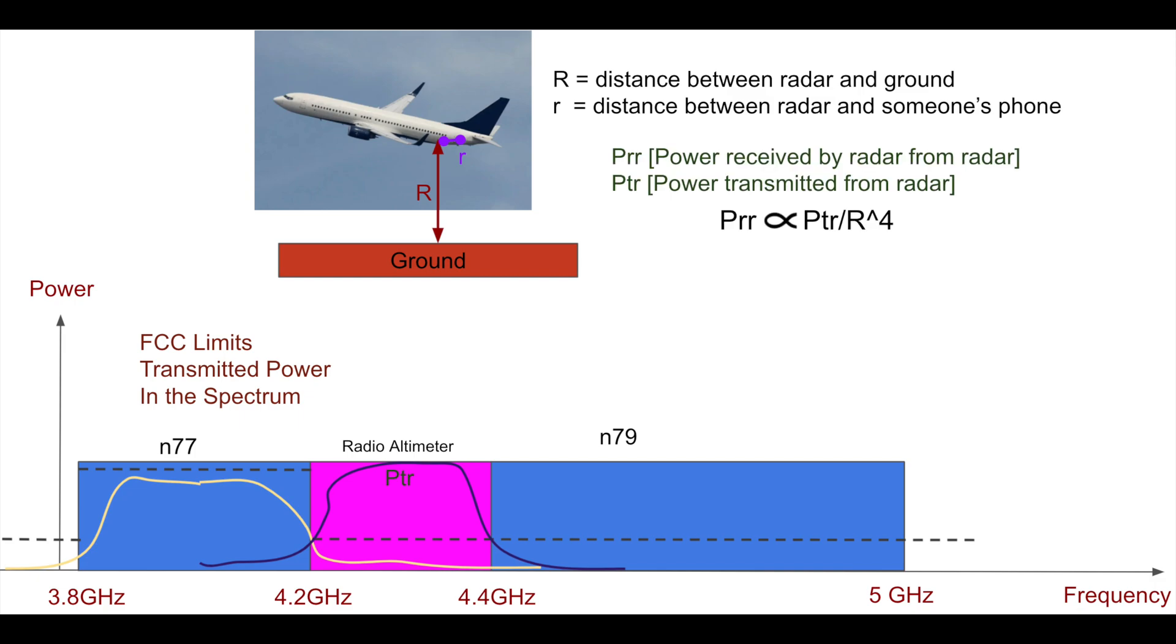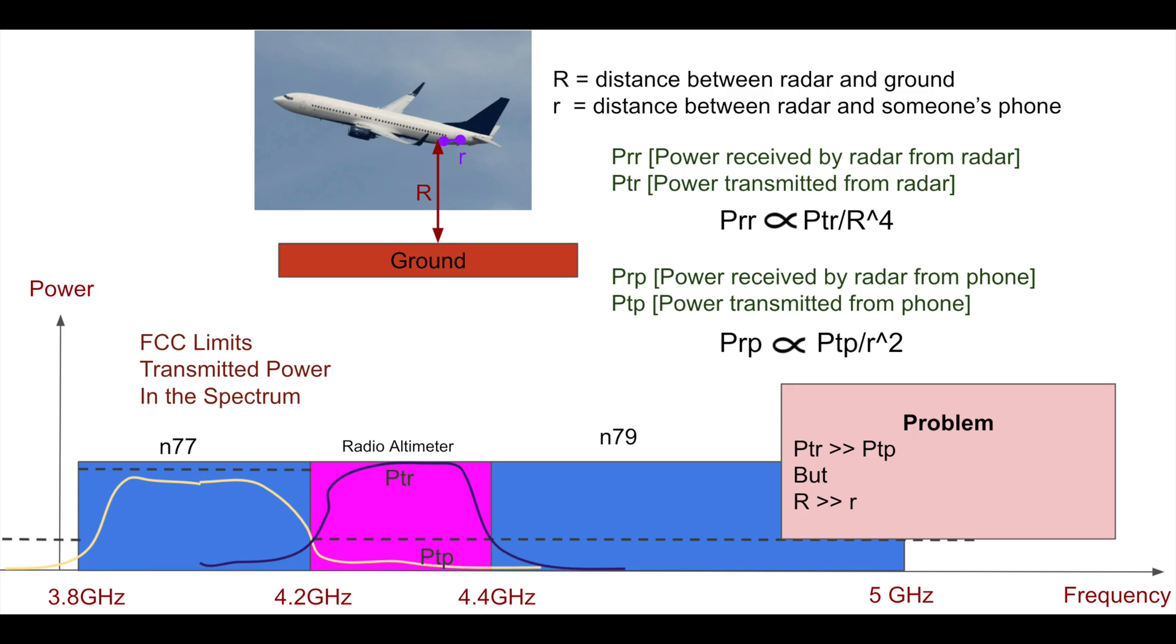So if we look at the physics, the power received in the radar is proportional, basically, to how much power you're transmitting from the radar, divided by big R to the fourth. And big R is basically the distance between the radar and ground, so the height of the airplane. Little r is the distance between somebody's phone and the radar. So some guy is sitting right by the window, trying to turn his phone on, connects to band N77, maybe is much closer to the radar. And the power received from the phone, that's basically the power the radar receives from the phone, is proportional to the power the phone transmits in band, which again is much lower due to FCC limits, but divided by R squared, which is much smaller. So there we have a problem, the power transmitted from the radio is much larger than the power transmitted from the phone in the radar band. But big R is also much, much bigger than little r.